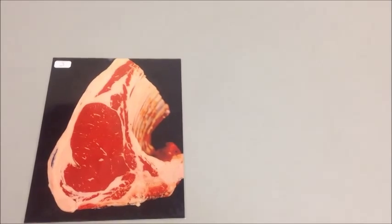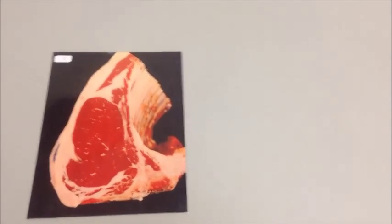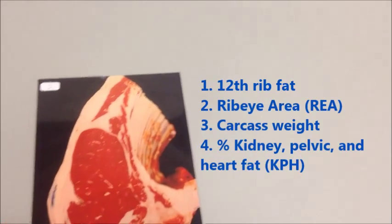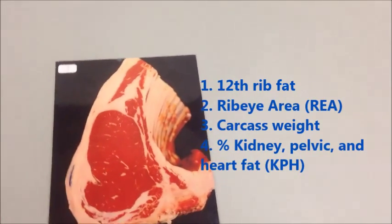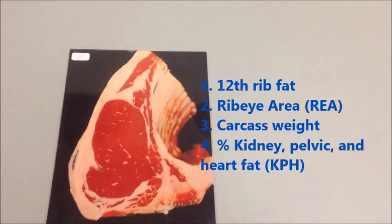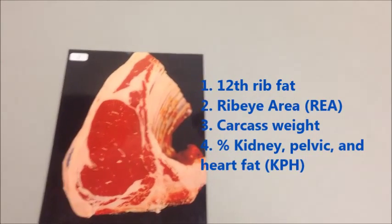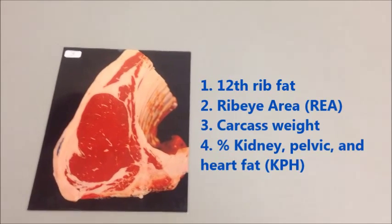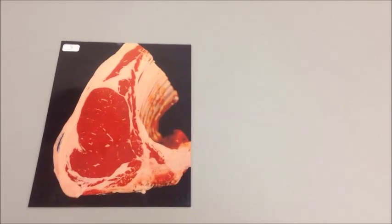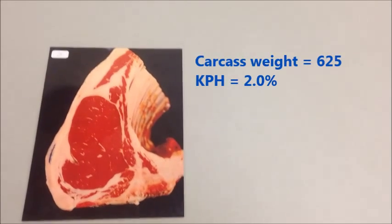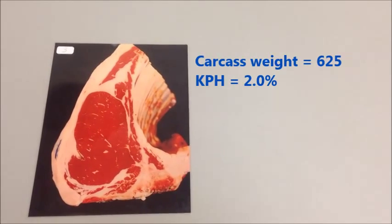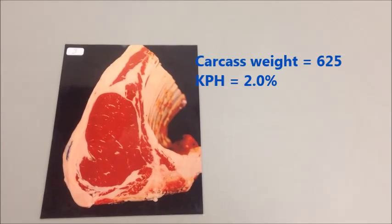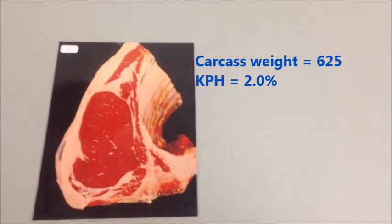To calculate the yield grade you need four measurements. First, you need the fat opposite the 12th rib, which is this fat right here — you measure it about three-quarters of the way up the ribeye. You need the size of the ribeye, or ribeye area. You need the carcass weight — the weight of the whole carcass. And you also need the percentage of kidney, pelvic, and heart fat. Carcass weight and KPH percent are usually going to be given to you when you have just a picture of a ribeye.